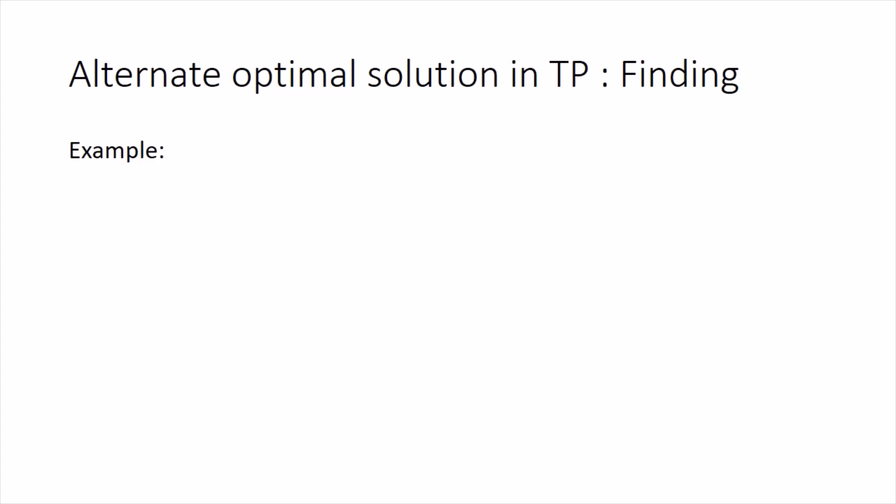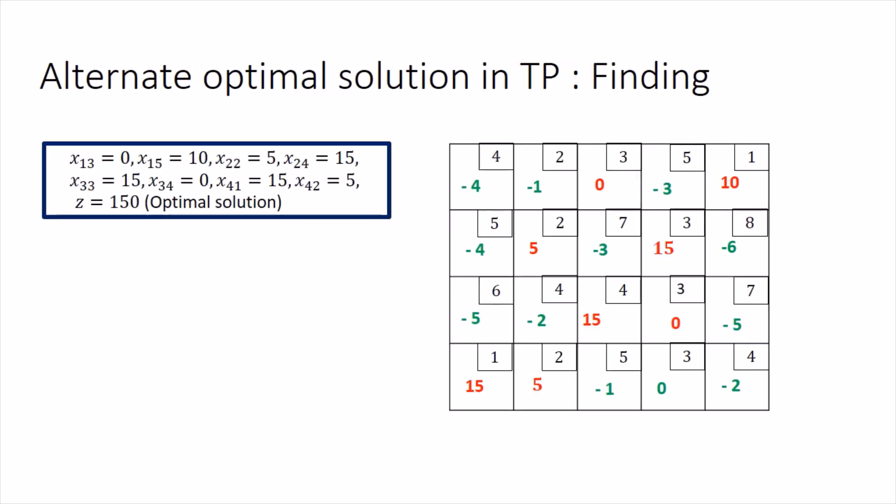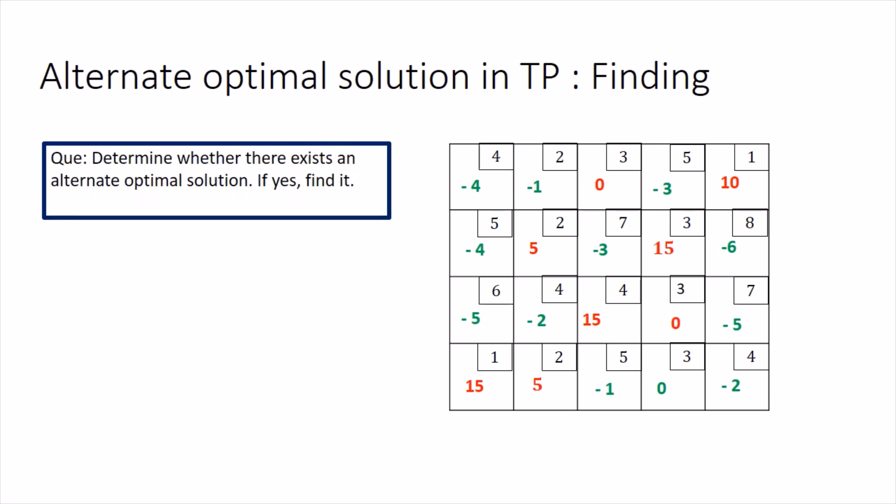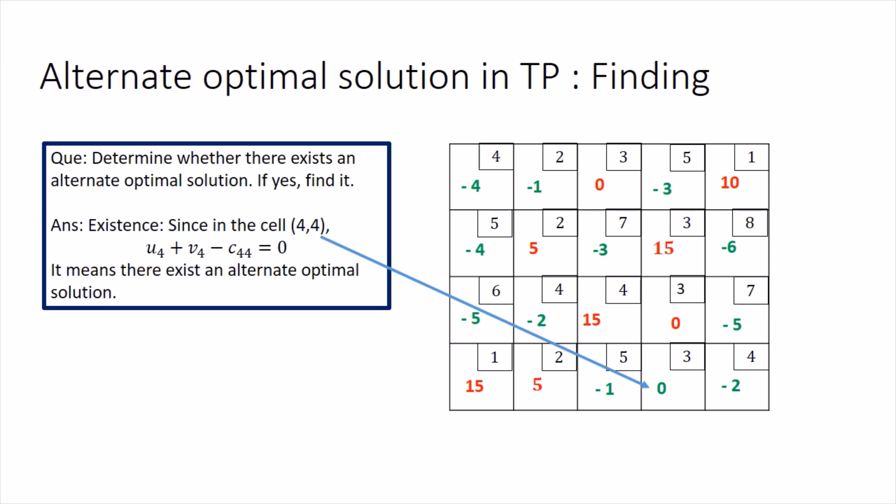Let's apply this technique to an example — the same example from our previous video lectures, where we have already found the optimal solution. The table in front of you is the optimal table: entries written in red are the allocations, and entries written in green are the UI plus VJ minus Cij values. Looking at the green-colored values, in cell (4,4) there is the value zero.